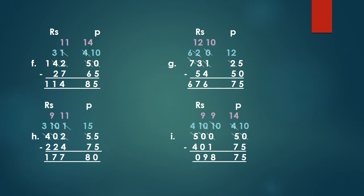Let's solve question number F. 142 rupees 50 paise minus 27 rupees 65 paise. Children, we cannot subtract 5 from 0, so we borrow. The 5 becomes 4 and the 0 becomes 10. 10 minus 5 equals 5. Now, we cannot subtract 6 from 4, so we borrow. 2 becomes 1 and the 4 becomes 14. 14 minus 6 equals 8. Again, 7 cannot subtract from 1, so we borrow. The 4 becomes 3 and the 1 becomes 11. 11 minus 7 equals 4. 3 minus 2 equals 1. 1 comes down as it is. As a result, we get the answer 114 rupees 85 paise.